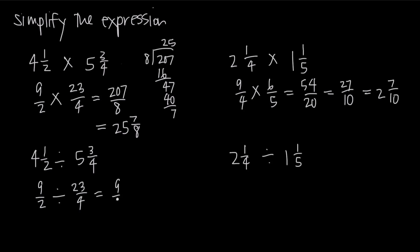So 9 halves divided by 23 fourths becomes 9 halves times 4 over 23 — we flip the second fraction upside down and multiply instead of divide. We multiply across the numerators: 9 times 4 is 36, and 2 times 23 is 46. Dividing both numerator and denominator by 2 gives us 18 over 23. This is a reduced fraction and not an improper fraction, so the final answer is 18 over 23.